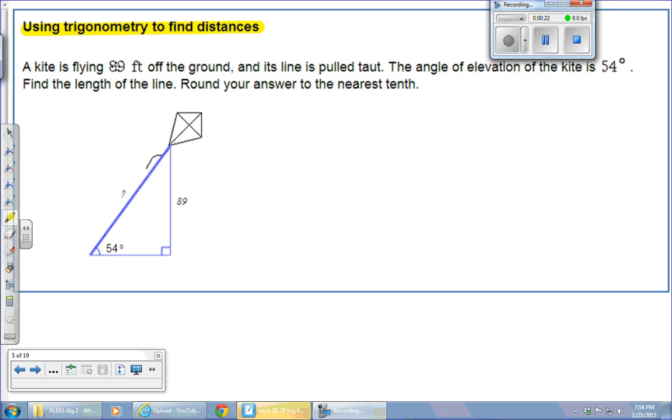They're all set up. Usually they give you a nice picture, so you don't even have to take too much information out of the word problem. So what we're looking at is the kite's flying 89 feet off the ground. That seems to be important. And it's pulled taut. So the angle of elevation is 54 degrees. So find the length of the line. Round your answer to the nearest tenth.